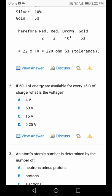Moving towards the second MCQ. He is saying that if 60 joules of energy are available for every 15 coulombs of charge, what is the voltage? Dividing energy by the coulombs, we will get the voltage: 60 divided by 15 is equal to 4 volts.